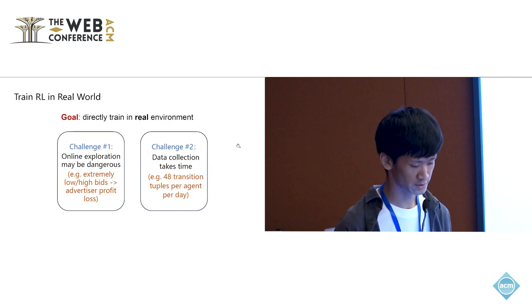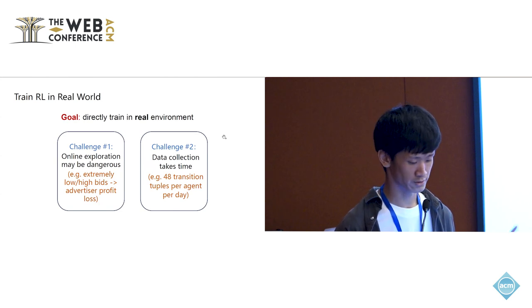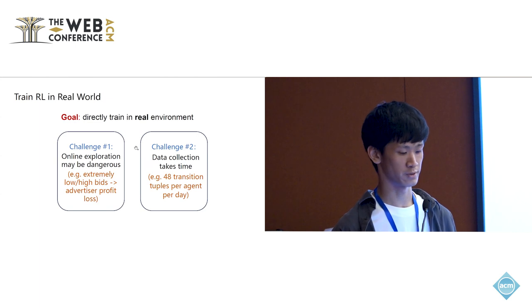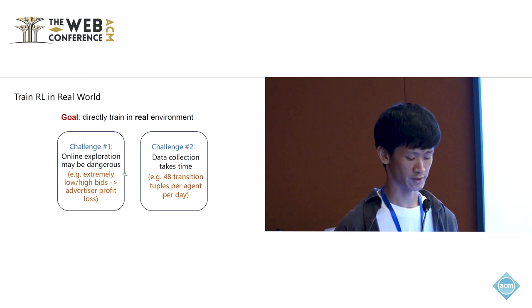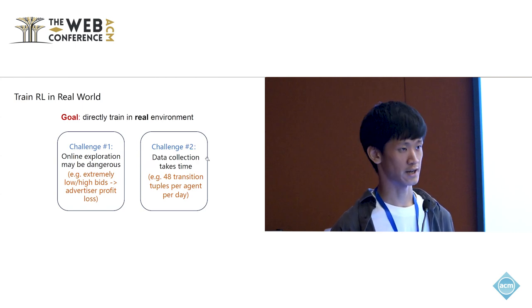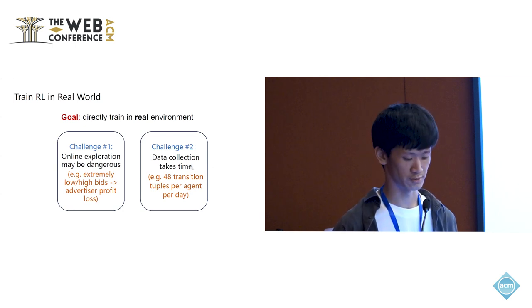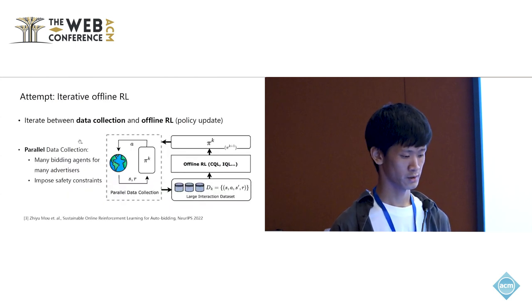In this work, we want to directly train an RL policy in a real environment. And there are mainly two challenges. First is that when we deploy our policy in a real environment, during the online exploration, it may produce unreasonable bids which will hurt the advertisers' profit. Also, data collection takes time. To train our policy, we may typically need thousands or even millions of those transition tuples. And collecting those transition tuples takes a lot of time.